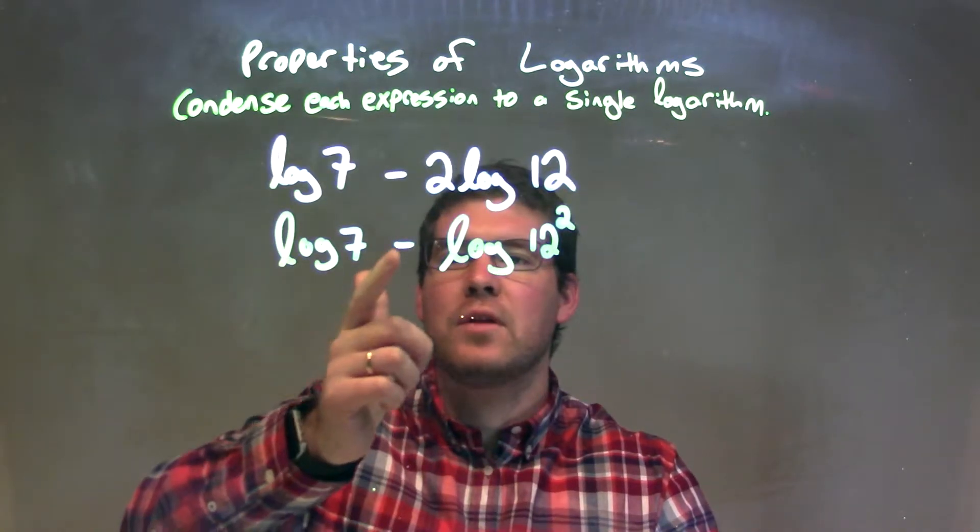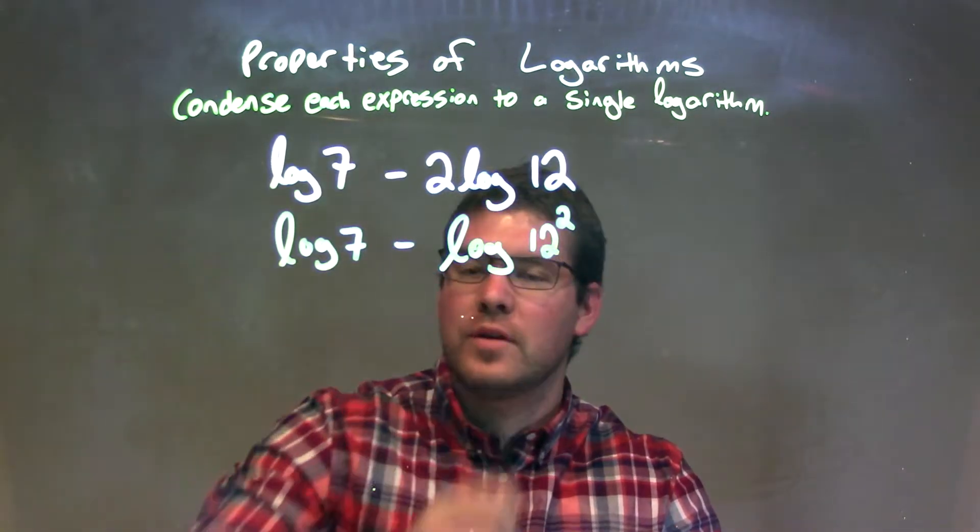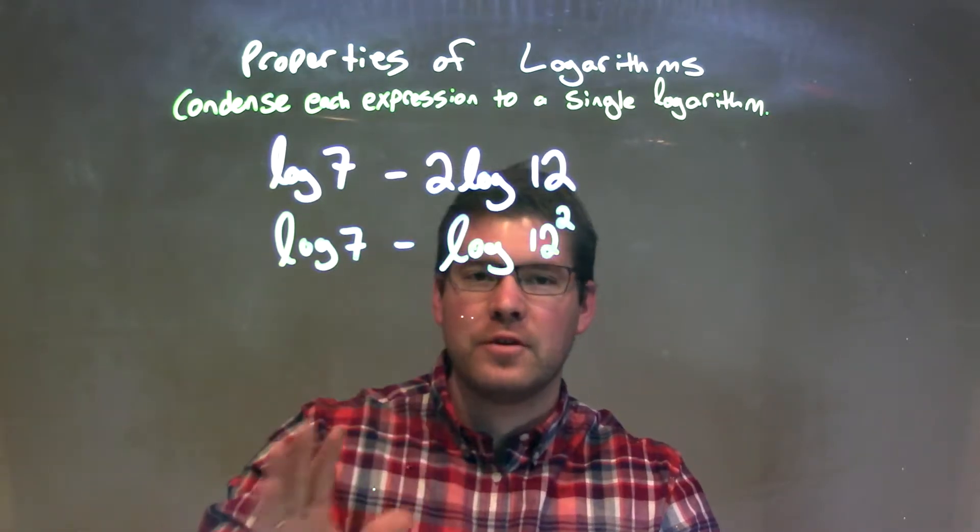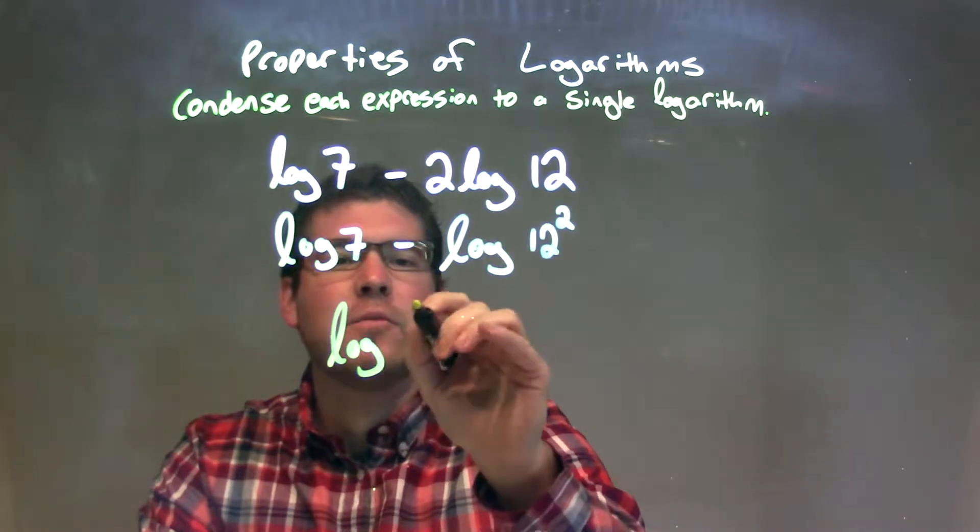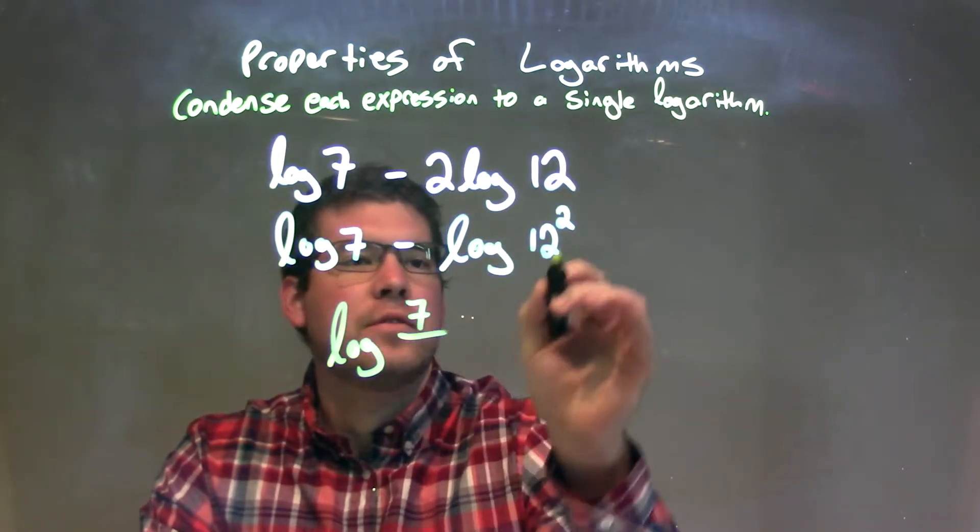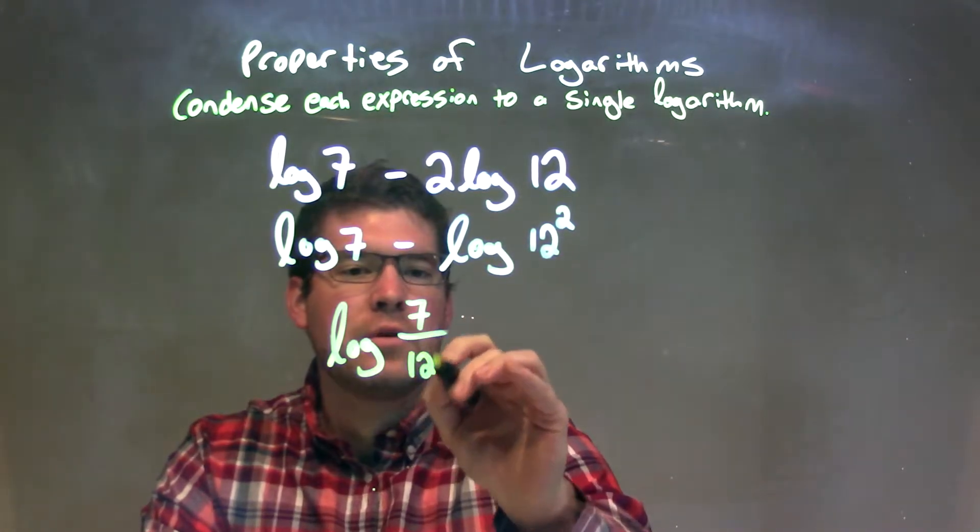Now, we have log of 7 minus log of 12 squared. That subtraction, when we condense to one big log, becomes division. So we have log of 7 over the second number, which is 12 squared.